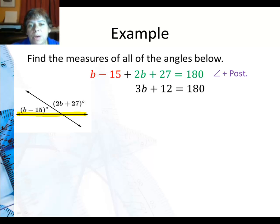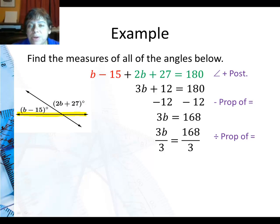Well 3b plus 12 is 180. I combine like terms the b and the 2b and the negative 15 and the positive 27. Subtract 12 from both sides using the subtraction property of equality. And I get 3b is 168. Then I can divide both sides by 3 using the division property of equality. And I get b is 56.